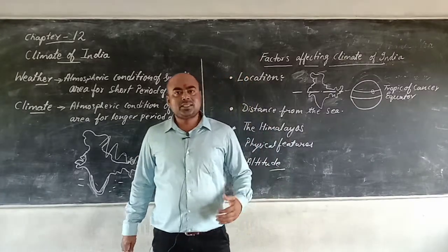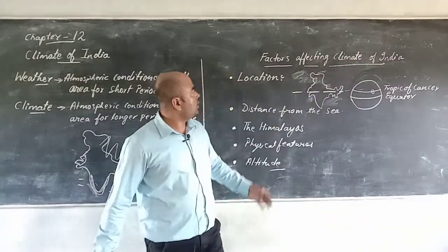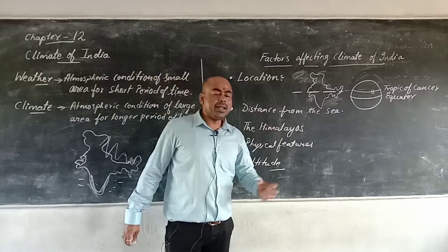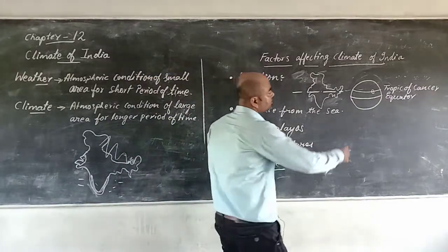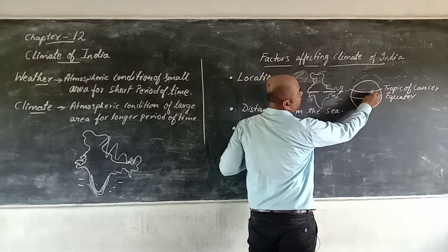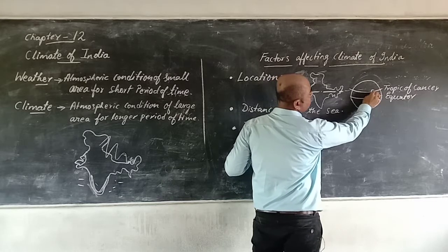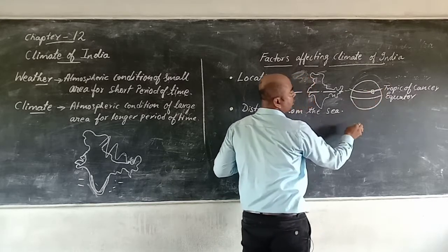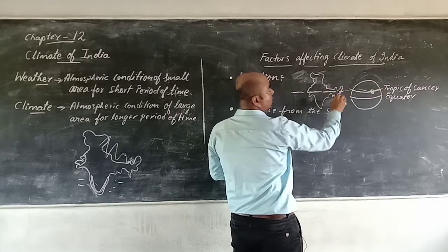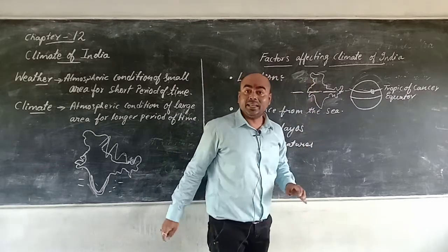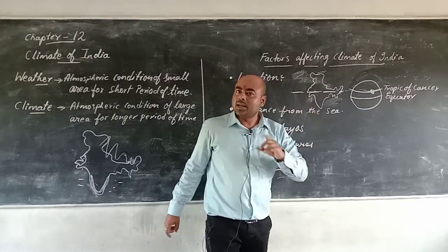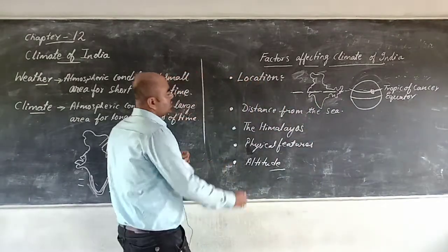Now let's discuss the factors affecting the climate of India. Number one is location. The Tropic of Cancer passes right through the middle of India. So India falls under the tropical zone, and therefore it will have a tropical type of climate.